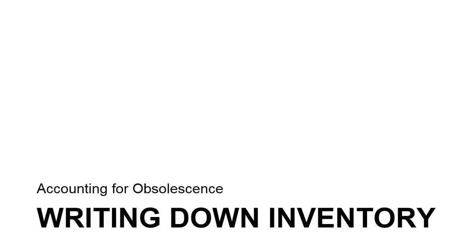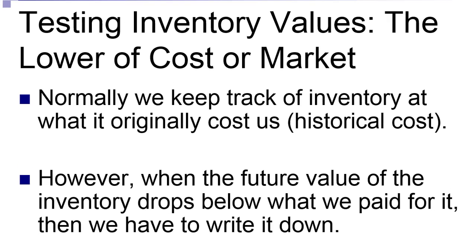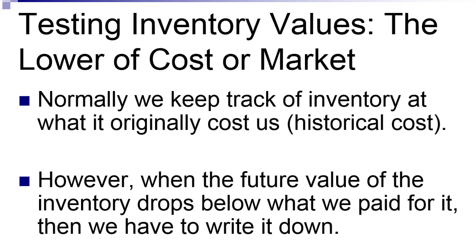Now that we've talked about why this is important, let's break our discussion into two pieces. We'll start with writing down inventory — how do we account for obsolete items like the record player my dad gave me? Normally, as we've already mentioned, we keep track of inventory at what it cost us — historical cost. This is the same thing we do with PP&E, with intangibles, with accounts receivable. What was it worth when we first got it? But when there's a reason to believe that inventory has dropped in value, then we have to write it down.